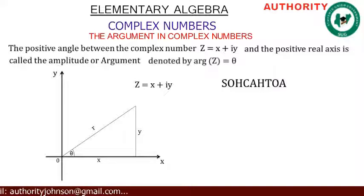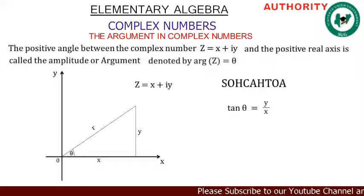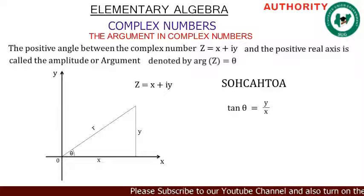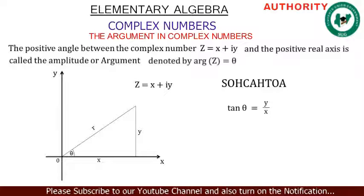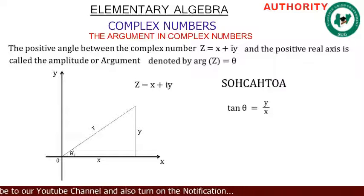Using SOHCAHTOA: sin θ gives us opposite over hypotenuse — we don't know our hypotenuse. cos θ gives us adjacent over hypotenuse — we don't know our hypotenuse. But tan θ gives us opposite over adjacent. We know our opposite to be y and our adjacent to be x, so we use tan θ = y/x.